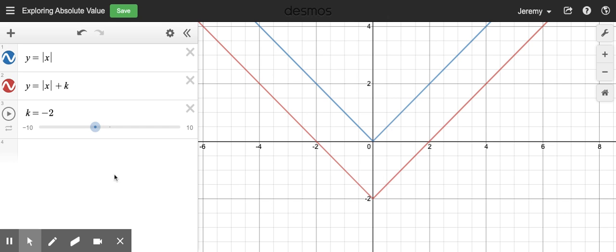This is part three of our exploring absolute value lesson series. In the first part, we introduced this very basic absolute value graph and noticed that it has this v-shape and this interesting point called the vertex.